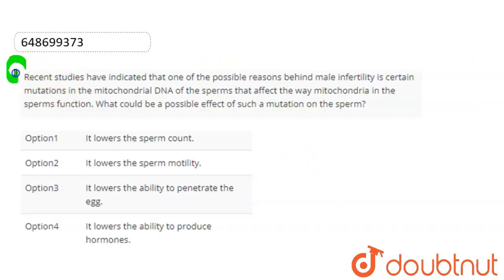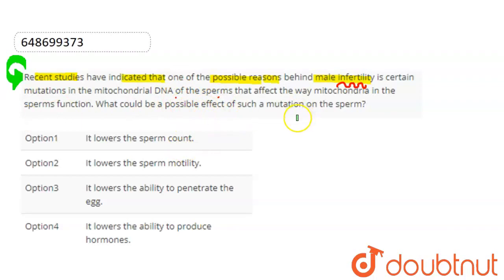Hello students, let's start the question. The question here is: recent studies have indicated that one of the possible reasons behind male infertility is certain mutations in the mitochondrial DNA of sperm, which affects the way mitochondria in the sperm function. So we need to tell which mutations are in sperm and what possible effects can happen.